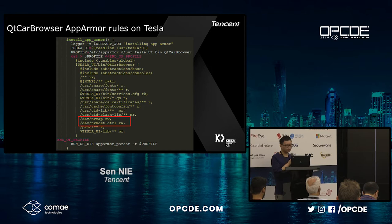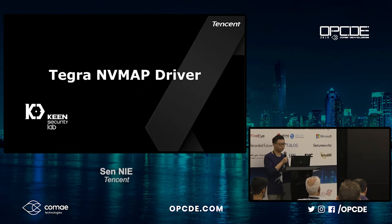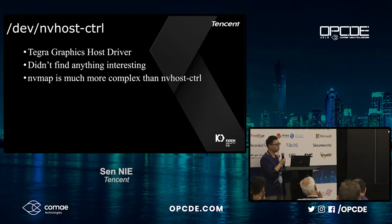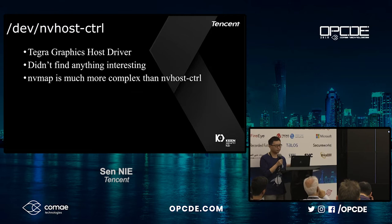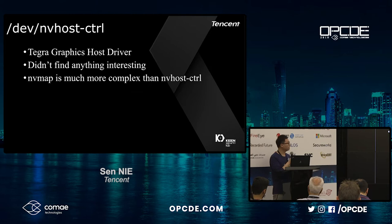We decided to dig into the source code and try to find a bug. I'll give a brief introduction to the NVMap driver. Before talking about NVMap, we need to talk about NVHost control — the Tegra graphics host driver. Other people have already found some interesting bugs in this module, which I'll discuss later. But I didn't find anything new there, so I quickly moved to the NVMap module. In my mind, NVMap is much more complex than NVHost control.